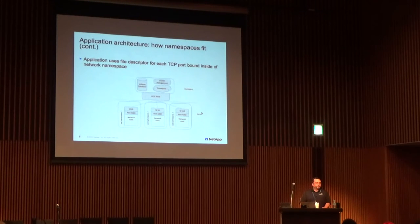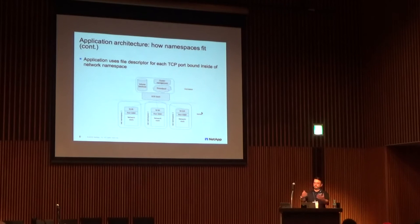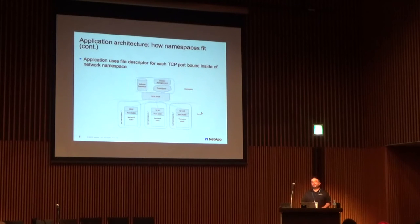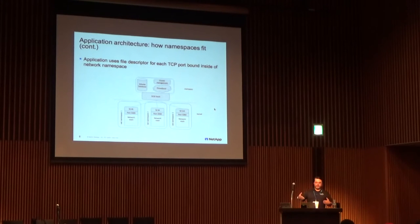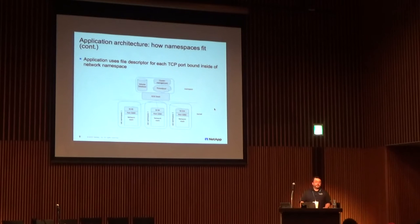We stumbled across this nice thing: while the ports are in separate layer-three domains, the file descriptors that back them are global to the host. So we can shove all of these file descriptors into an epoll loop, and whenever something needs to happen on a file descriptor we get a notification, check which namespace it's in, switch to it, and start processing socket data. That's the basic gist of the architecture we're going after.